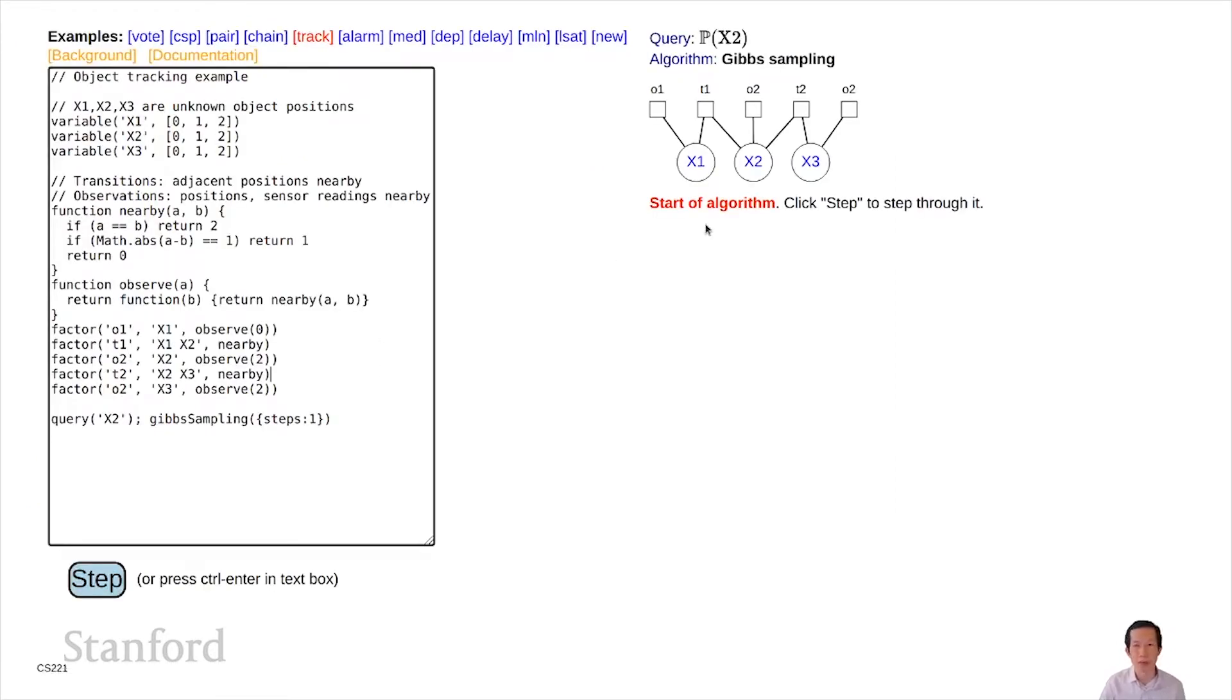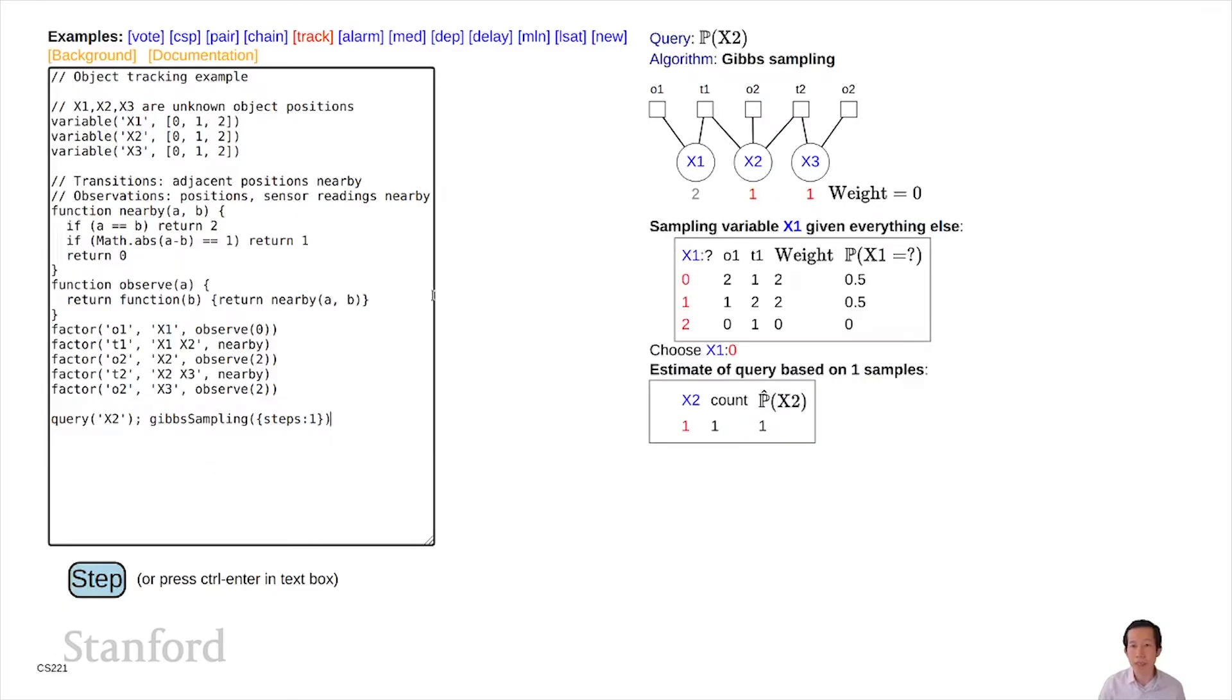Let's look at this demo to give us a fuller sense of what's going on. Here is the object tracking example. I have three variables. I can specify the query, which is which variable I'm interested in calculating the marginal of. I'm going to run Gibbs sampling here. At the beginning, I sample a variable x1 given everything else. Consider all the possible values of x1, look at their potentials or factors, compute a weight, normalize to get a distribution, and sample a value according to these probabilities. In this case, it's just a coin flip, I choose x1 equals zero. Then I update my counter, recording that I saw x2 equals one once.